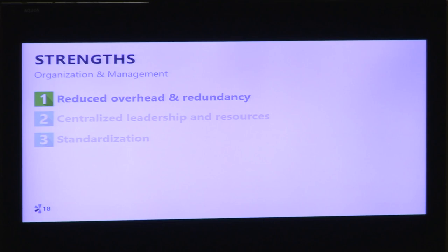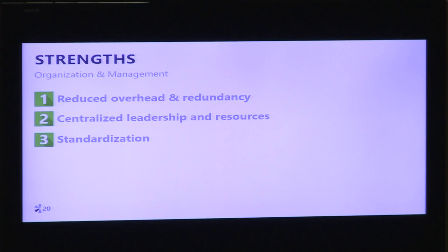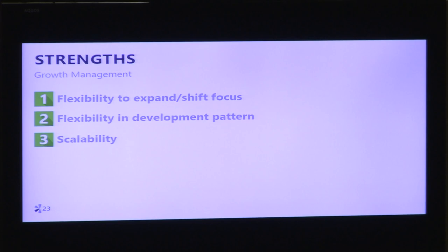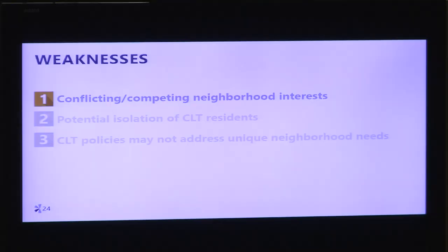Under organization and management, strengths include reduced overhead and redundancy, centralized leadership and resources, and standardization. Running a CLT at the citywide level would eliminate the need to start up individual CLTs on the neighborhood level, which could be costly financially and administratively. Growth management strengths include flexibility to expand and shift focus, flexibility in development pattern, and scalability — there are other tools the city can use to complement the CLT, such as an affordable housing ordinance or CRA affordability requirements. Weaknesses include conflicting or competing neighborhood interests, potential isolation of CLT residents, and citywide policies that may not address the unique needs of individual neighborhoods.